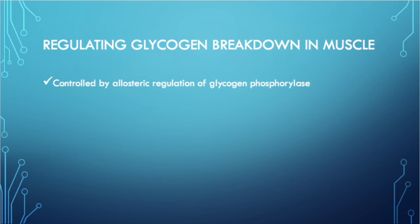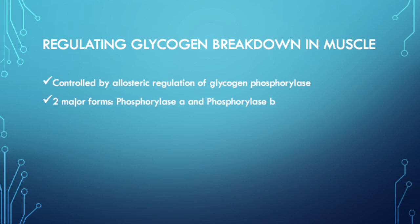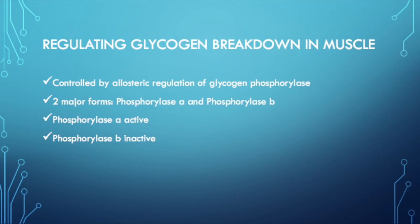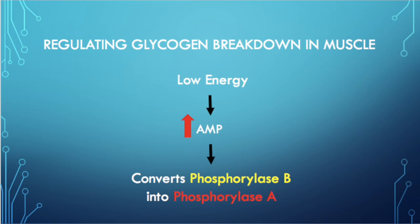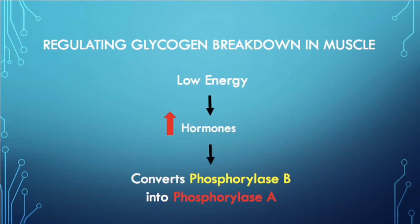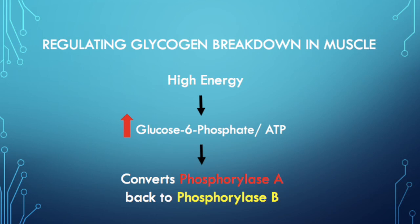Glycogen breakdown is regulated in both the muscle and the liver. In the muscle, regulation is controlled by allosteric regulation of glycogen phosphorylase, which exists as phosphorylase A (active) and phosphorylase B (inactive). When ATP levels are low relative to AMP, AMP activates phosphorylase B to convert it to phosphorylase A, releasing more glucose for glycolysis. During intense activity, epinephrine activates phosphorylase kinase, which also converts phosphorylase B to A. When ATP and glucose-6-phosphate are plentiful, they act as allosteric inhibitors, converting phosphorylase A back to B to stop glycogen breakdown.